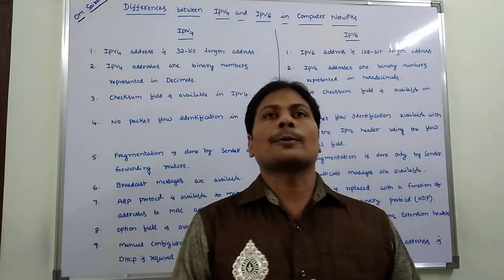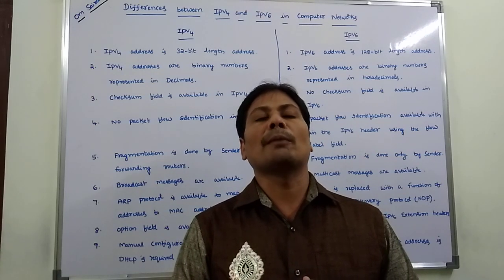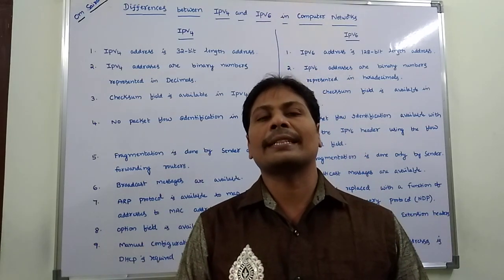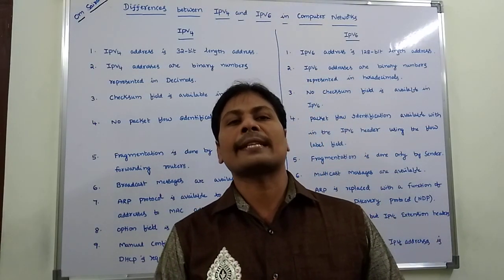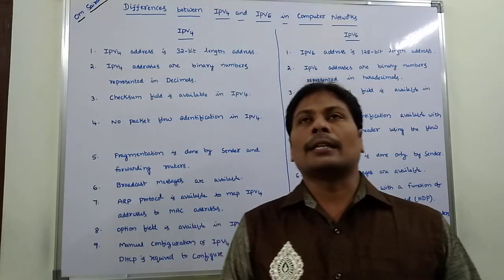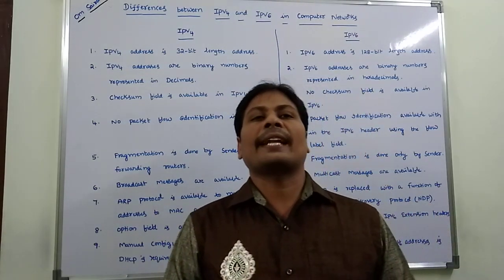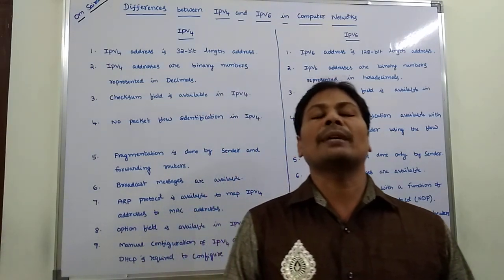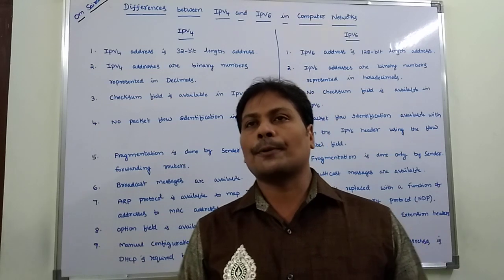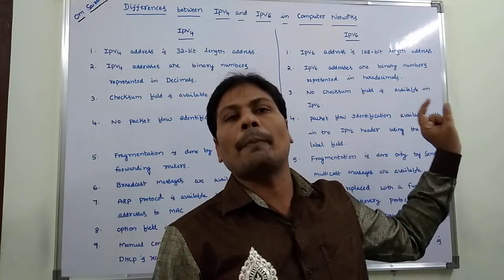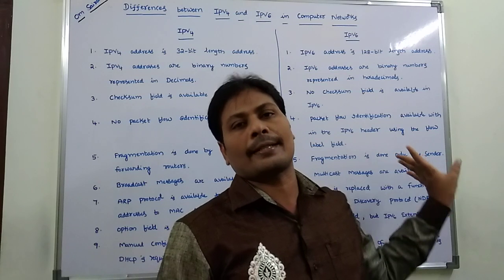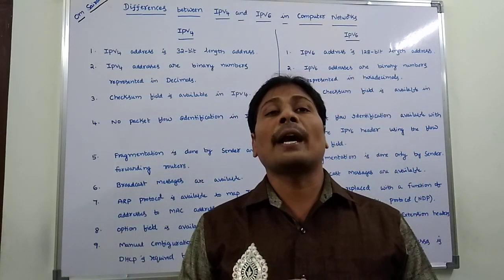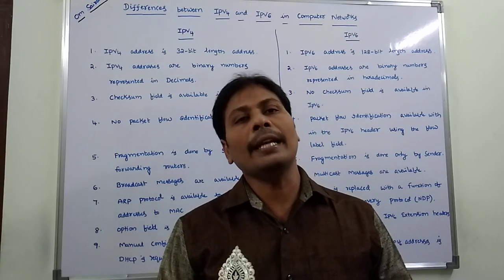In hexadecimal, 0 to 9 are the same numbers. But 10 is represented as capital A, 11 as capital B, 12 as capital C, 13 as capital D, 14 as capital E, and 15 as capital F. So in IPv6, addresses are binary numbers represented in hexadecimal, whereas in IPv4, they are represented in decimal.